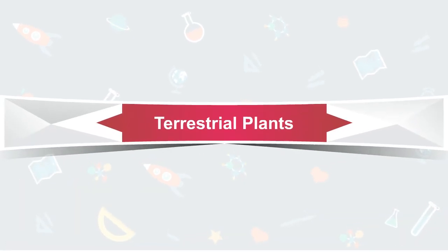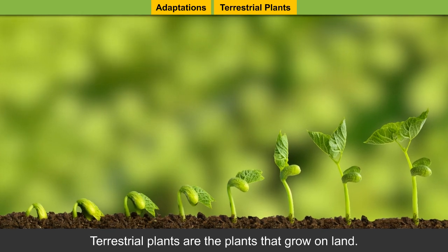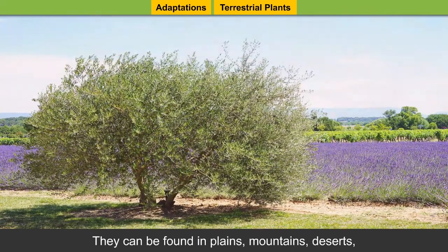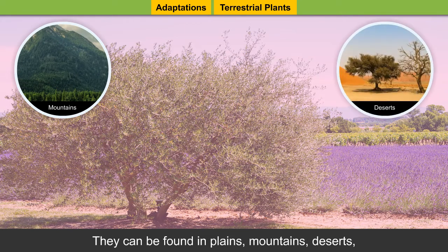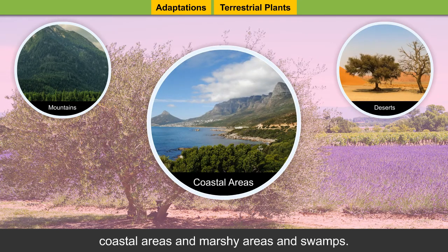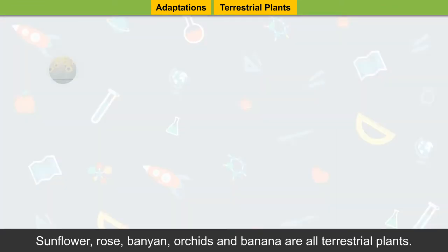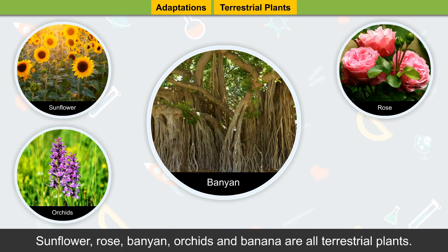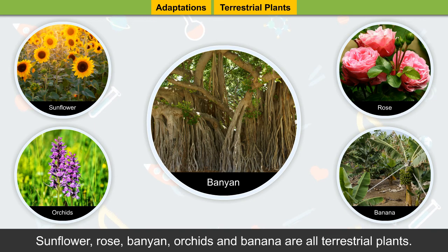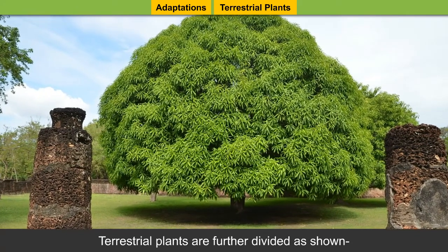Terrestrial plants are the plants that grow on land. They can be found in plains, mountains, deserts, coastal areas, and marshy areas and swamps. Sunflower, rose, banyan, orchids, and banana are all terrestrial plants. Terrestrial plants are further divided as shown.